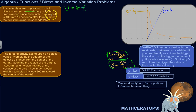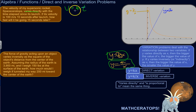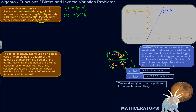We don't know what k is yet. If its velocity is 100 meters per second 10 seconds after launch, how fast will it be going 15 seconds later? To answer this, we need to find k. Plugging in: 100 equals k times 10, so k equals 10. Now we can be more specific: velocity equals 10t. That's the constant of variation.